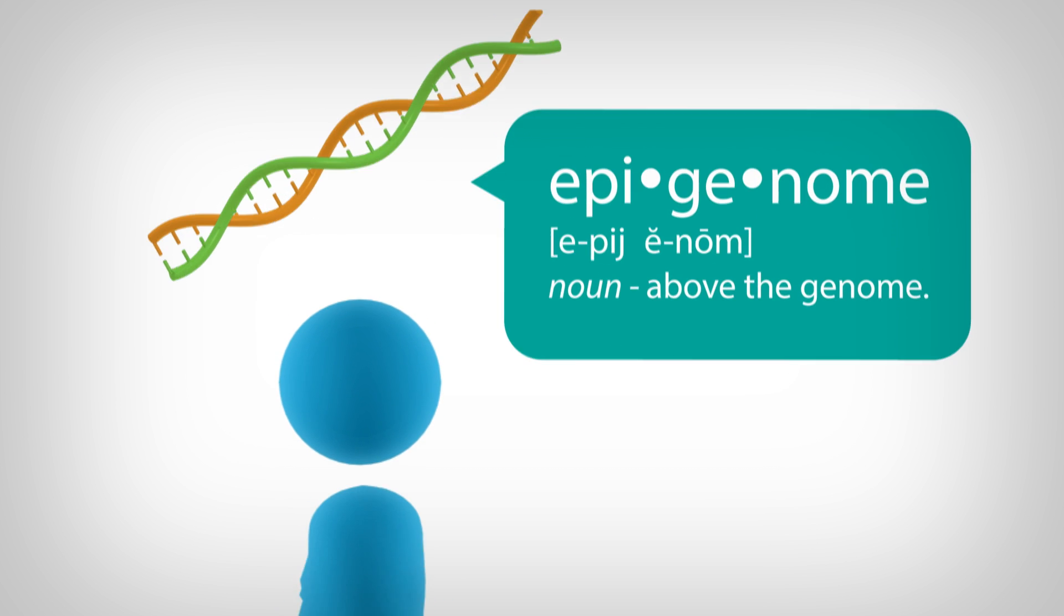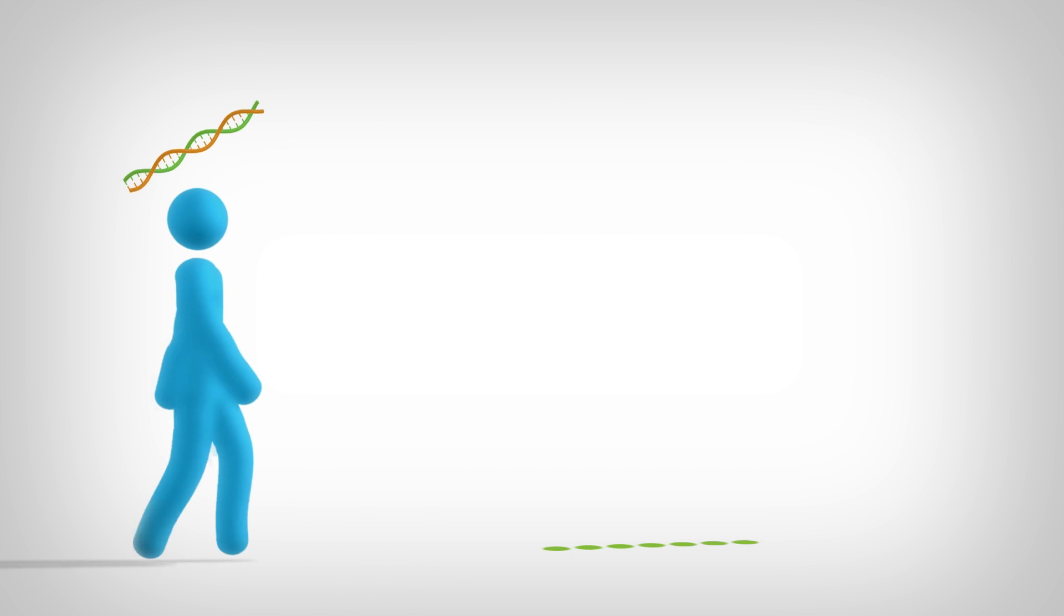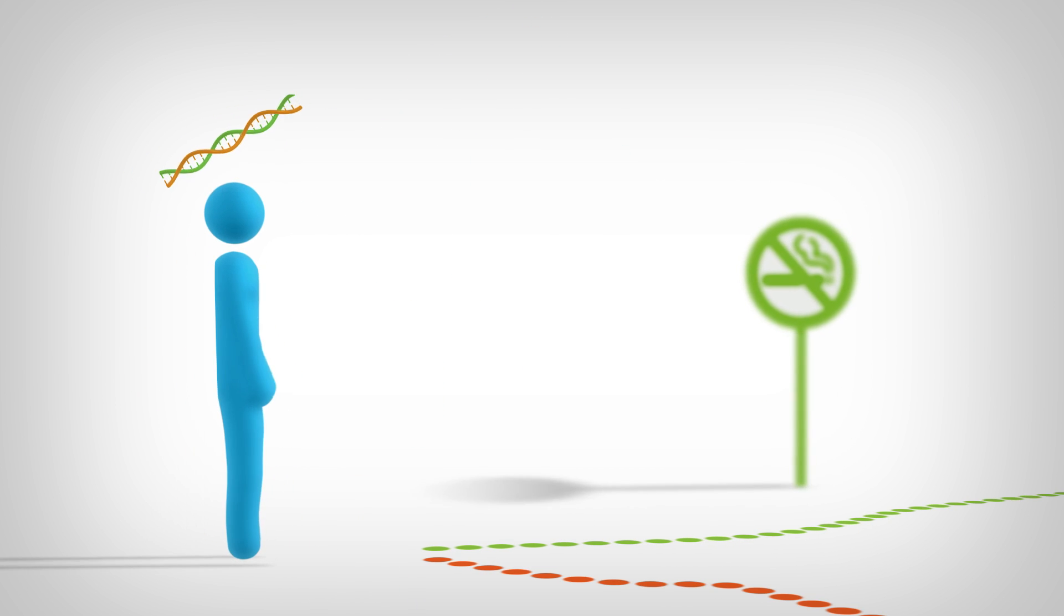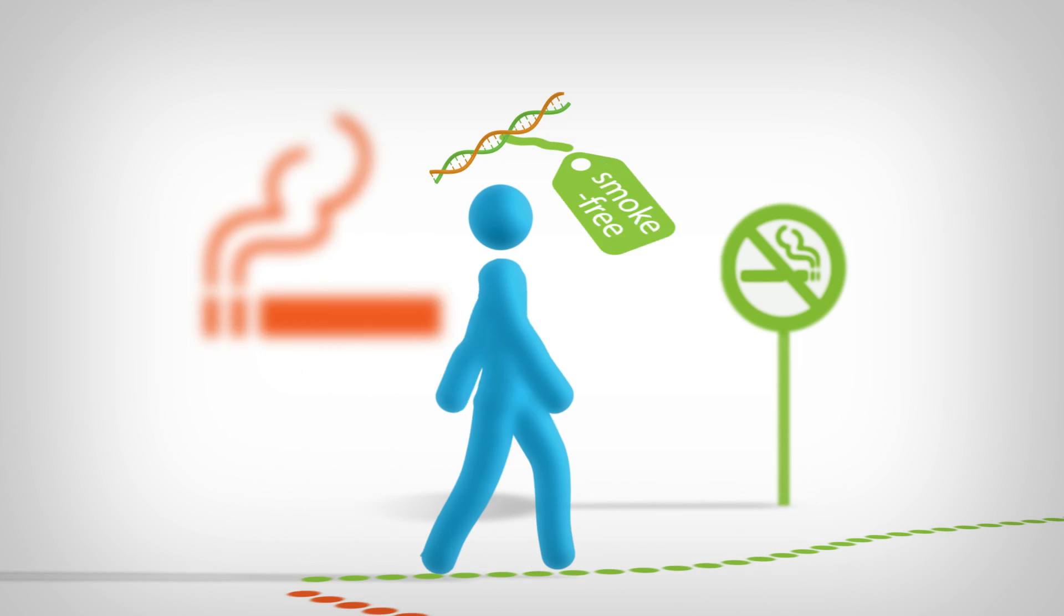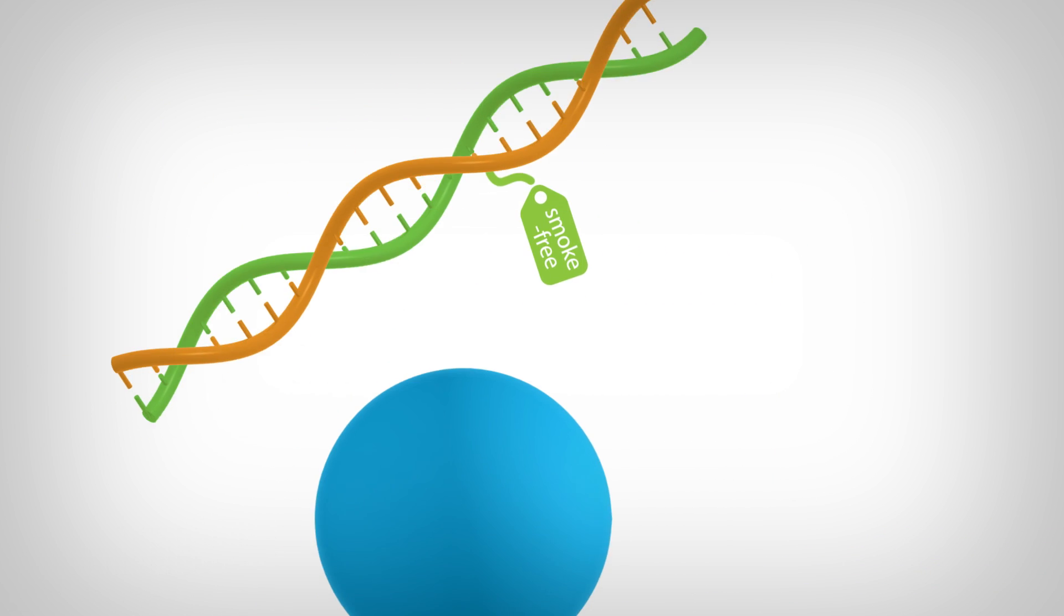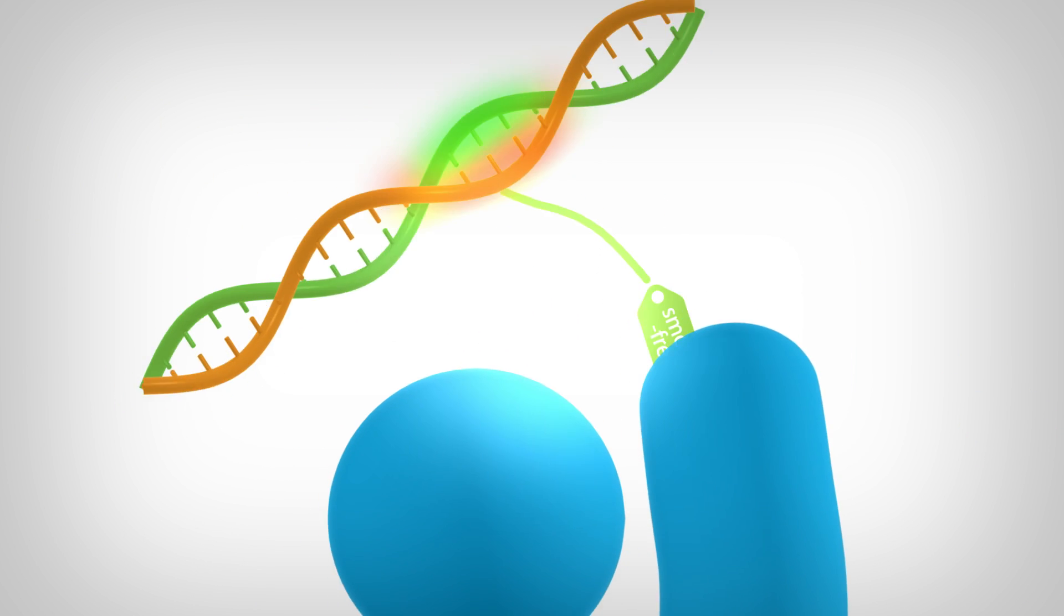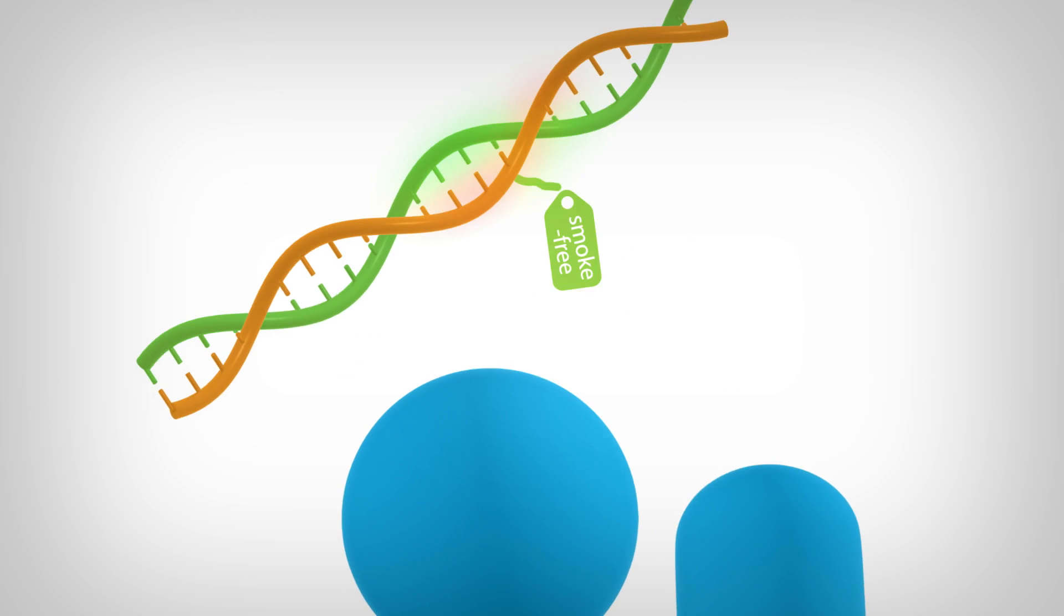Here's how it works. As you go through life making choices, your epigenome adds genetic tags to your DNA. These tags act like a dimmer for lights, controlling which genes are used, when they are used, and how much they are used.